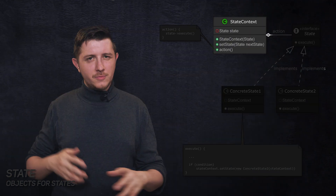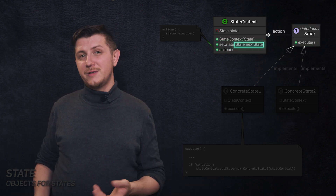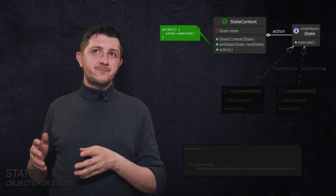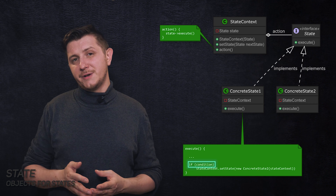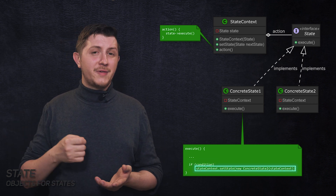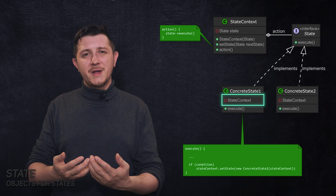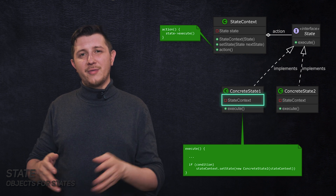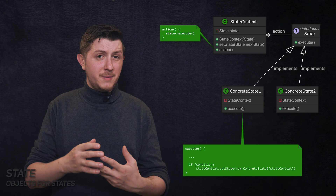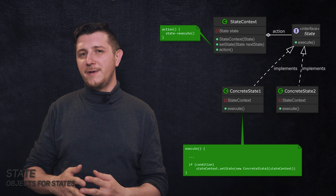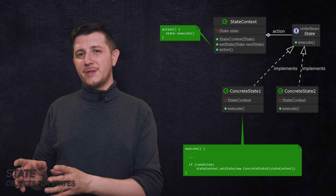We extend the state context object and add a setState method. Now we can pass a new current state to this object and update it during runtime. Whenever we call an action on this object, it is passed to our current state, and the state decides what to do. It may replace the current state with a different one based on a parameter. State may also store internal data that changes during runtime. When you use the state design pattern, you communicate to other developers that this is the state of the object — not the strategy, not something fixed. That's why we have two separate patterns that are similar in construction but very different in nature.